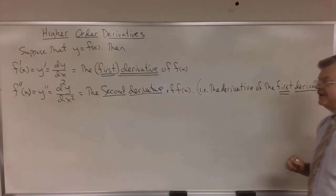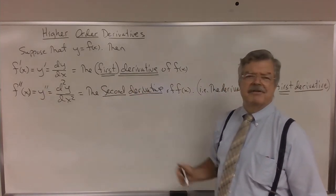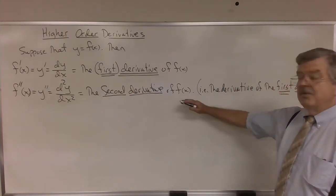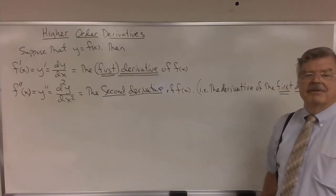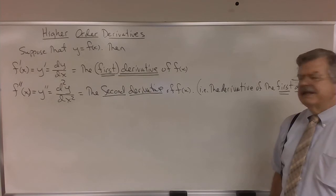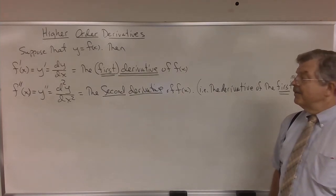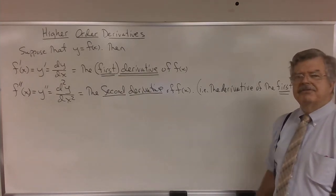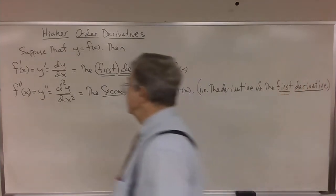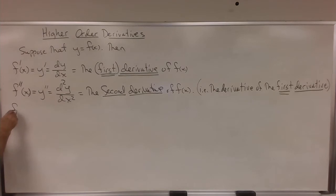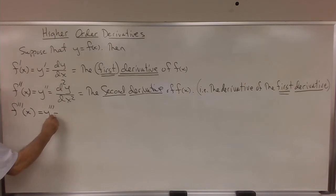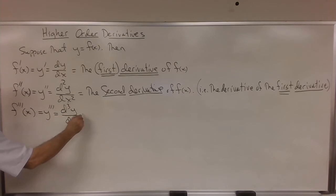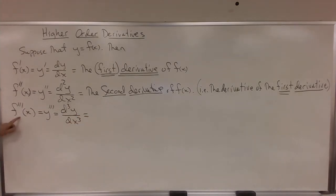Now the reason we didn't use the expression 'first derivative' before is because we didn't know anything about a second derivative — there was no chance for ambiguity. But we're going to be working with second derivatives and maybe third derivatives. f triple prime of x, y triple prime, d cubed y dx cubed — these are the notations for the third derivative of f of x.